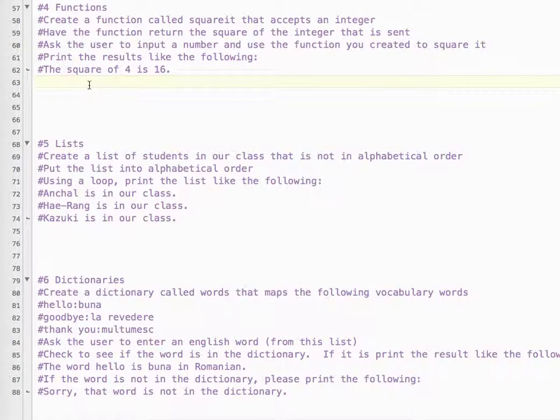Let's take a look at number four for Python final review. We are talking about functions. So we are creating a function, and it's going to be called squareit. It accepts an integer. The function returns the square of the integer that is sent.